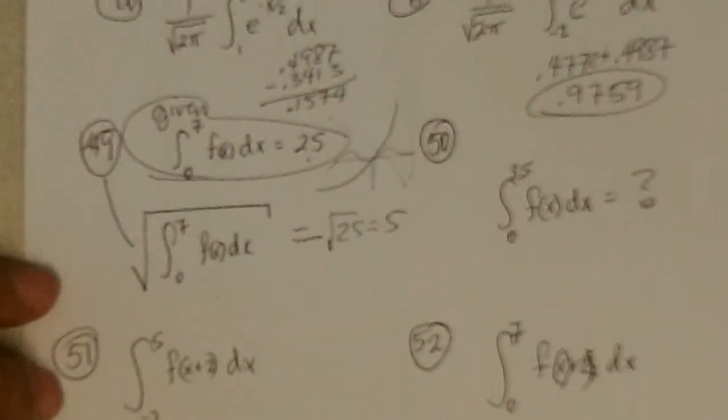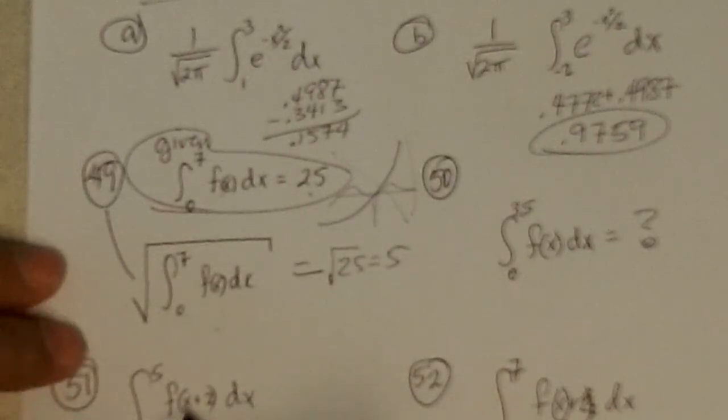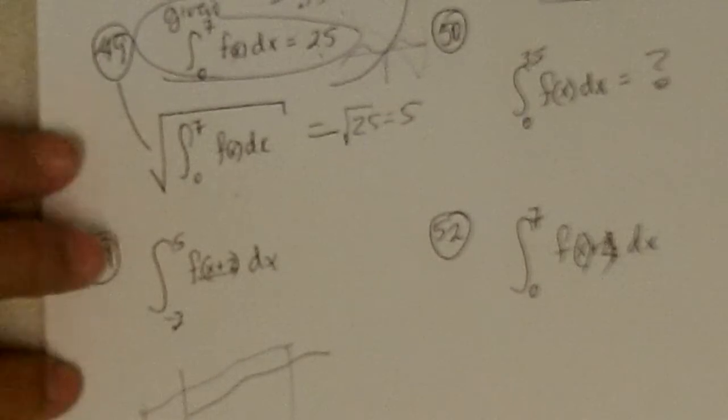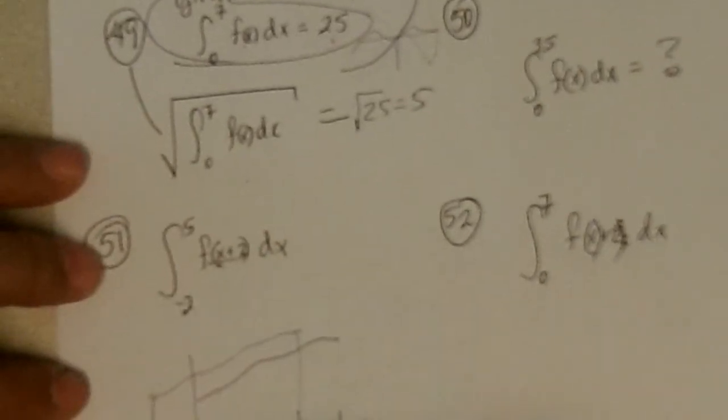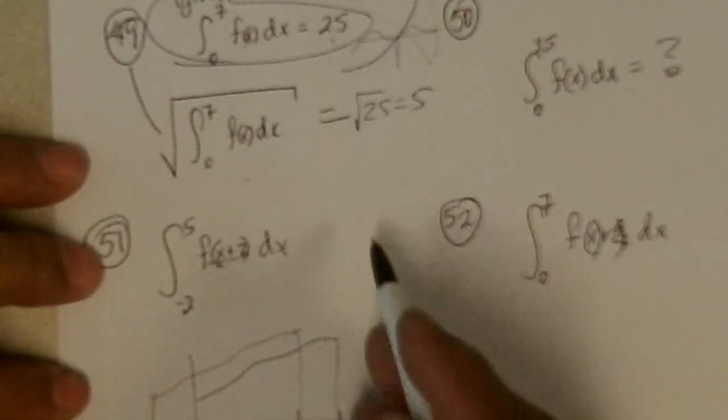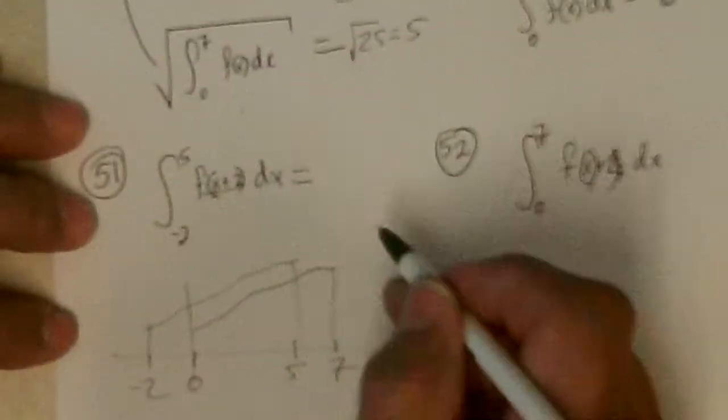And for 51, this says move the curve, adding 2 to the x moves it left 2. So if whatever the curve was, if we move it left 2 and then find the area from minus 2 to 5, well, that would be the same as it was from 0 to 7 because the limits have been moved 2 back and the curve has been moved 2 back, and so we get the same answer. And the answer before was 25, so this is 25.